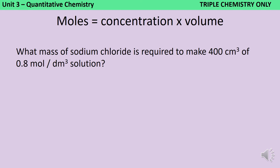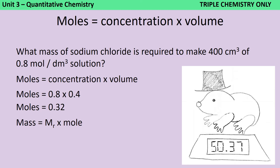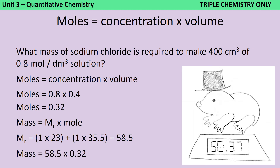You could also be asked to work out the mass of solute required to make a particular solution. We start by calculating moles, which is concentration times volume: 0.8 times 0.4 gives 0.32 moles. Now we use the mass = Mr × moles equation, but we need the Mr of sodium chloride first — which is 58.5. So 58.5 times 0.32 gives a mass of 18.72 grams.